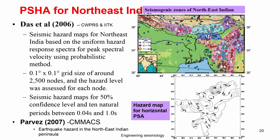Some of the work in the northeast was done by Das et al., the Central Water Power Research Institute (CWPRS), and IIT Kanpur. They carried out a detailed study on a 0.5-degree grid size, performed seismic hazard analysis with a 50 percent confidence interval, and produced a PGA distribution map considering all seismic activity. You can see the different seismic zones included and the PGA distribution map for the entire northeast region.